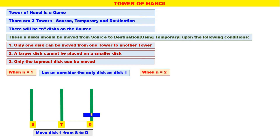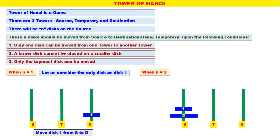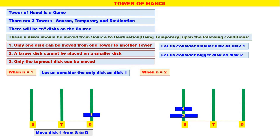Now when n is equal to 2, we have three towers: Source, Temporary, Destination. Two disks are there — disk number 1 and disk number 2. Let us consider the smaller disk as disk number 1 and the bigger disk as disk number 2. How to move these two disks from Source to Destination? Only one disk can be moved at a time, and you have to move the topmost disk always.